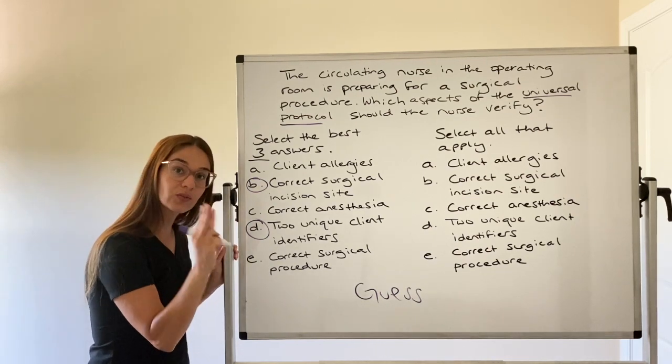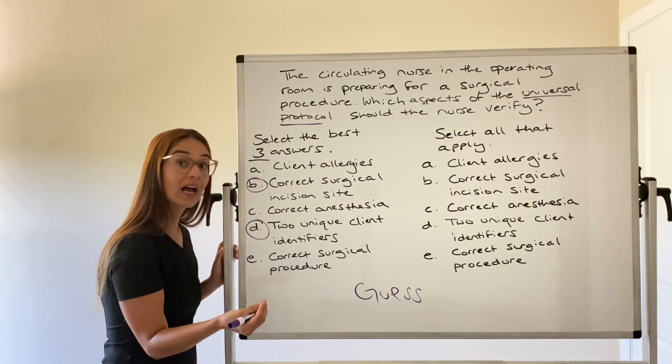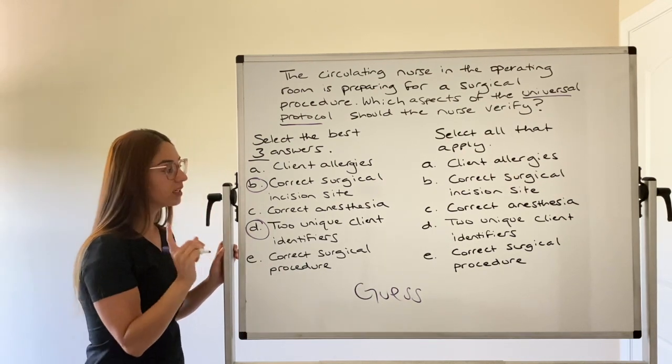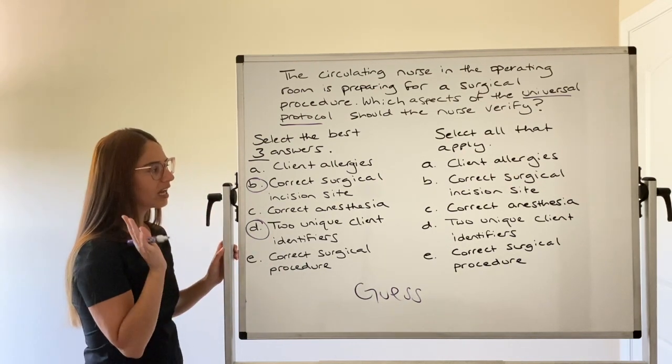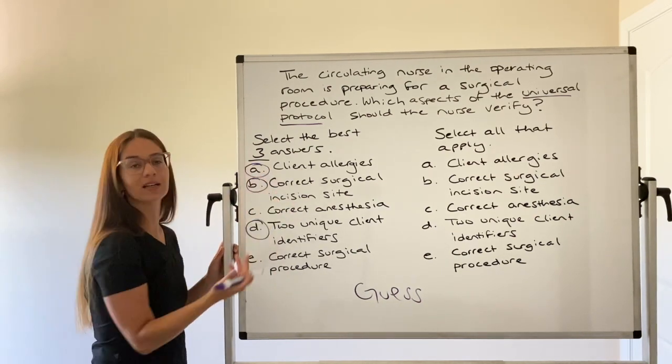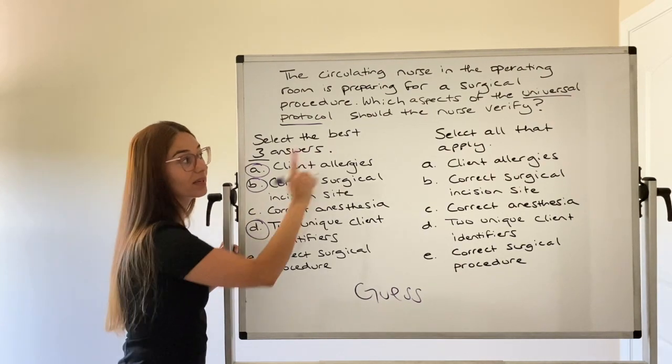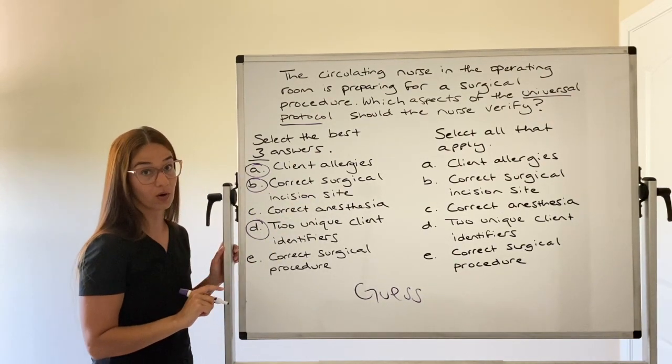But this is select three. Remember, there is three correct answers. When you see the select N style of question, they're telling you how many are right. Now I'm going to go ahead and guess. I can't really remember the third one, but I'm just going to pick client allergies because, I mean, come on, it's always important to assess client allergies. But remember the topic is specific to universal protocol.